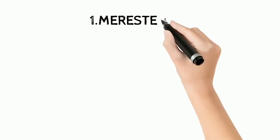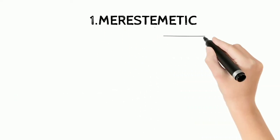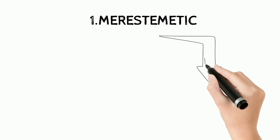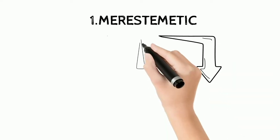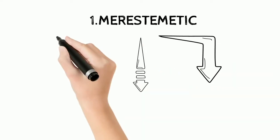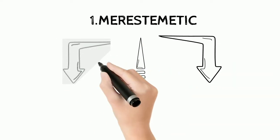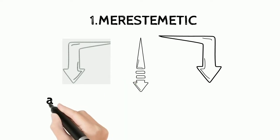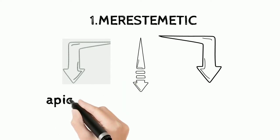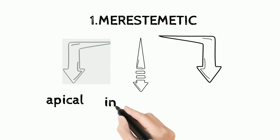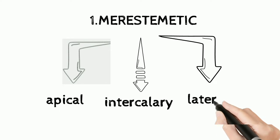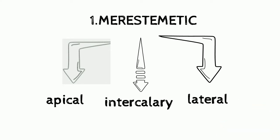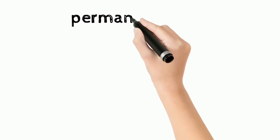Meristematic tissue is divided into three types. Number first is Apical Meristematic tissue. Number second, Intercalary Meristematic tissue. Number third, Lateral Meristematic tissue.